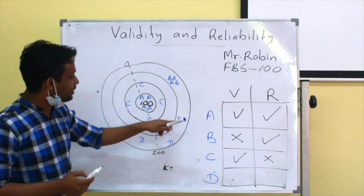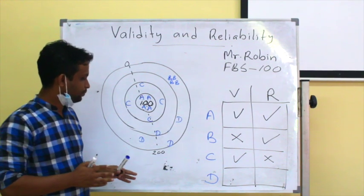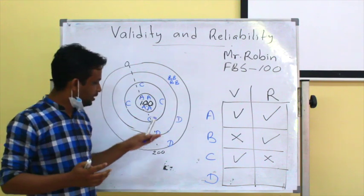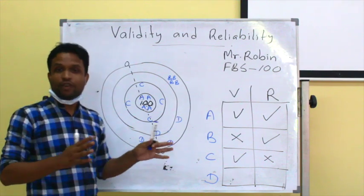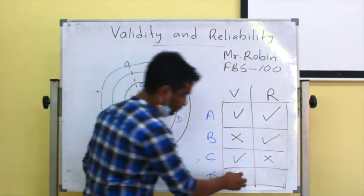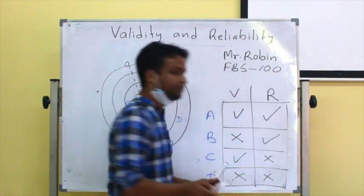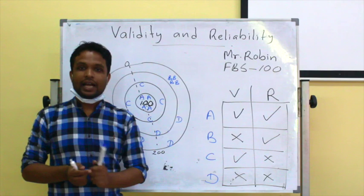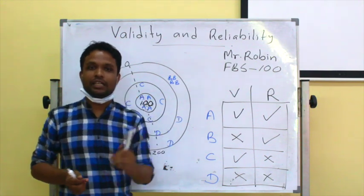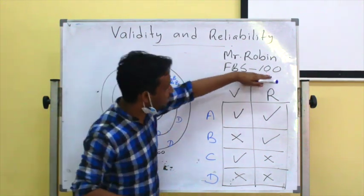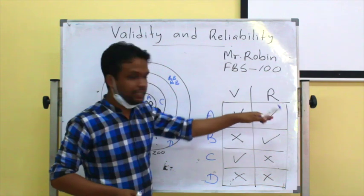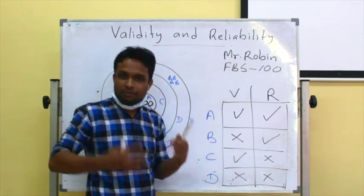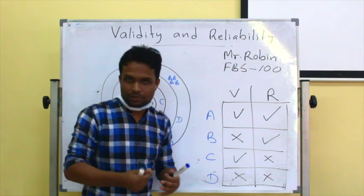Look at test D. We received haphazard results from test D, so it is neither valid nor reliable. Simply put, validity is the ability of a screening test to measure the exact value, and reliability is the ability of a screening test to produce similar results in repetitive measurements.